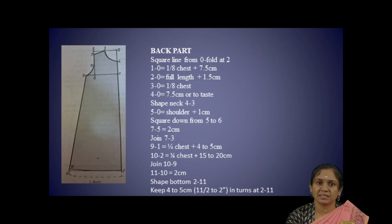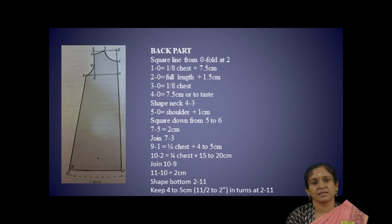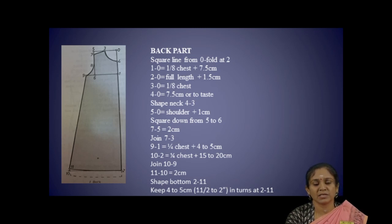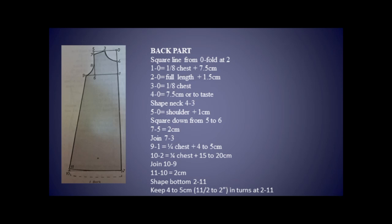How to draft the Naiti. First, we are going to draft the back part. For this Naiti, 0 to 1 is the center front line. Mark 0 to 1: 1/8 chest plus 7.5 cm. Then 0 to 2 is the full length, that is full length plus 1.5 cm — so 115 cm plus 1.5 cm, totally 116.5 cm for the full length.